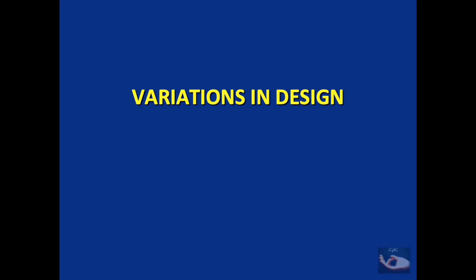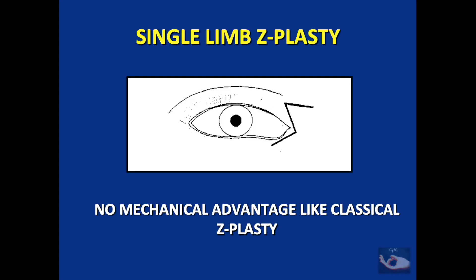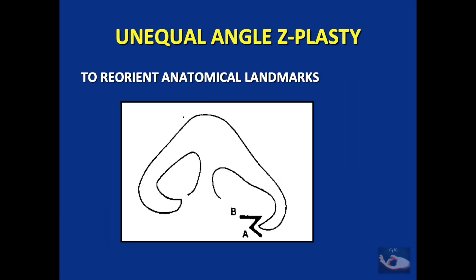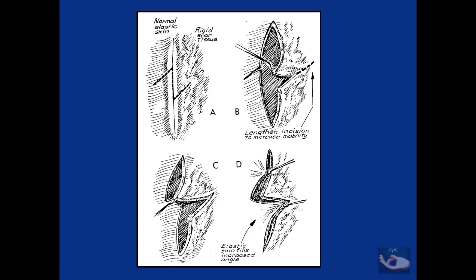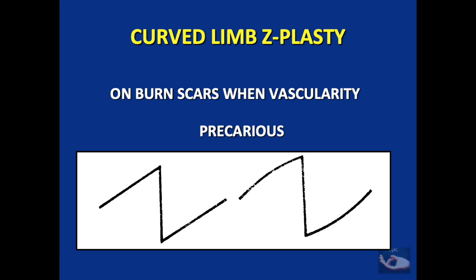There are a few variations possible in the design. One such variation is the single limb Z-plasty, which is not very different from the unequal limb Z-plasty. These variations are commonly used to reorient anatomical landmarks. The next variation is called the unequal triangle Z-plasty, used when there is excess scarring on one side of the central limb. If the tissue is scarred, a slight curve in the lines made for the Z-plasty — called the curved limb Z-plasty — will help bring more vasculature to the tip of the flap.